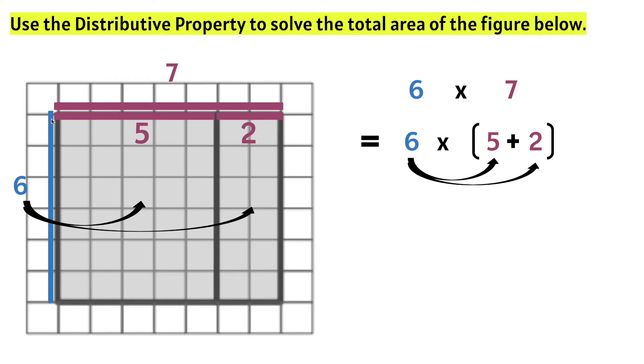Because we're sharing this length with the five and with the two units. So we can rewrite six times open parentheses five plus two as six times five. So six the length, five the width, plus six for the length times two for the width. So six times two.